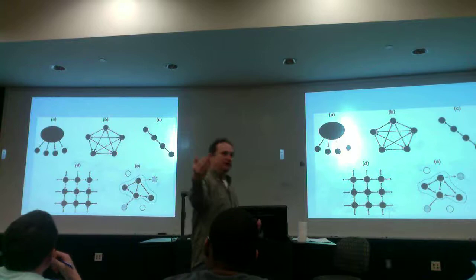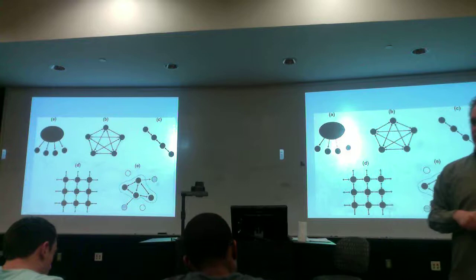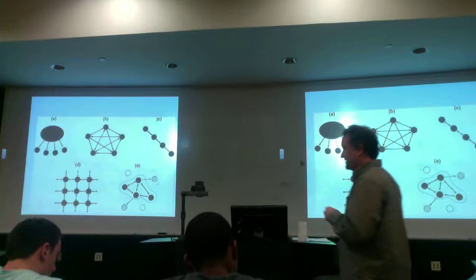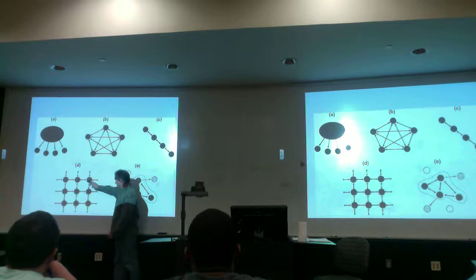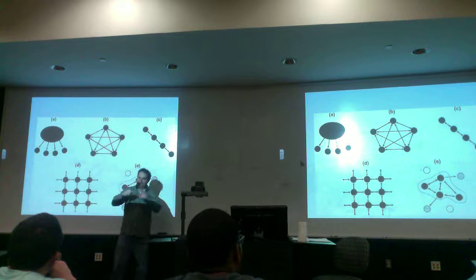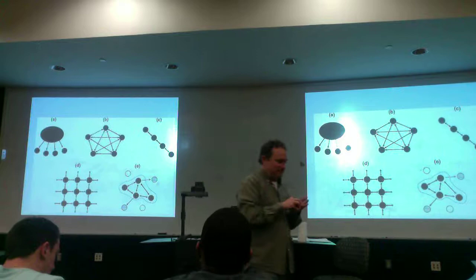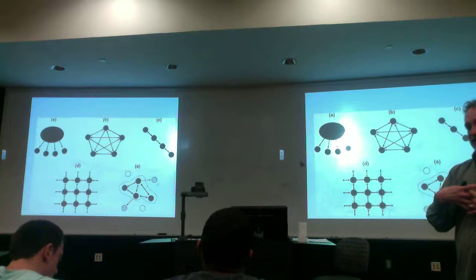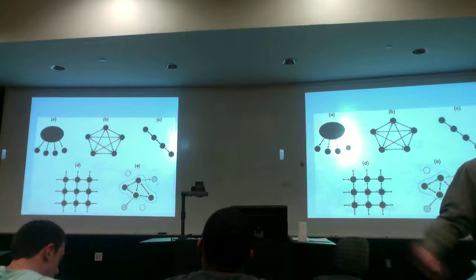Letter D is the two-dimensional stepping stone model — just another possibility of how populations are arranged in space. From any one population you can move to an adjacent population, but you cannot move to just any population. So individuals in populations arranged this way can move to the next adjacent population in any direction, but cannot leap over populations like in the island model.